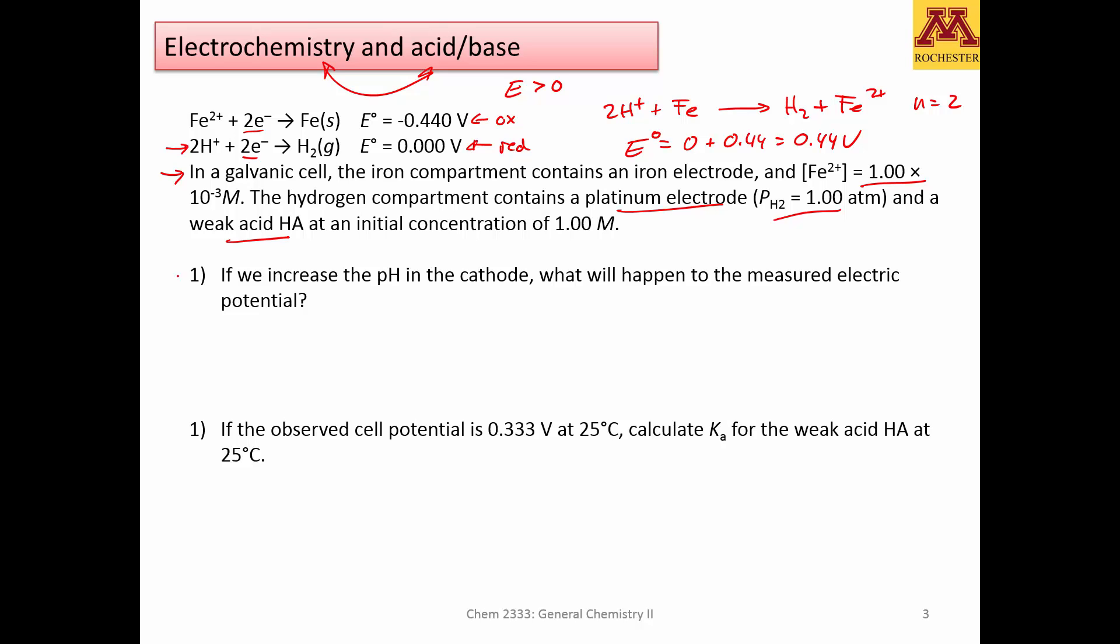So now let's consider what happens if we increase the pH in the cathode. First of all, the cathode is where your H plus is, so if we were to increase the pH in the anode, in principle, and I say this in principle because this may also have some precipitation reaction related, but in principle if it were in the anode, this would not affect the potential. But if we increase the pH in the cathode,